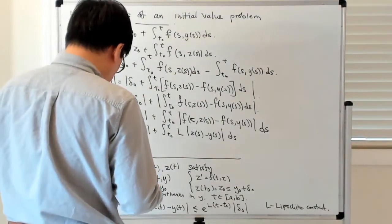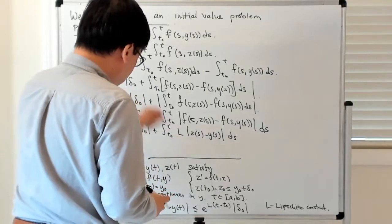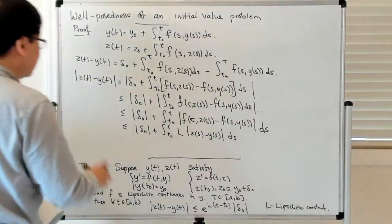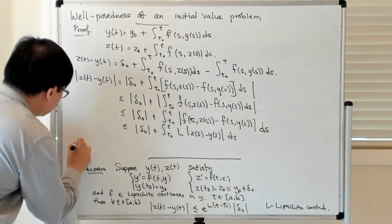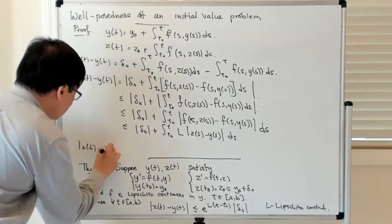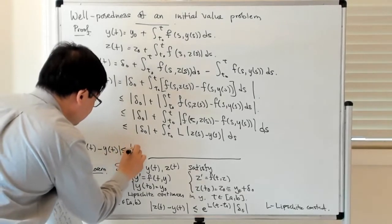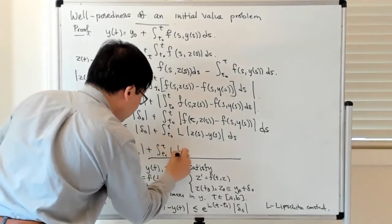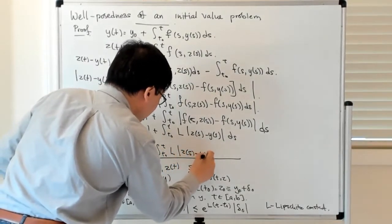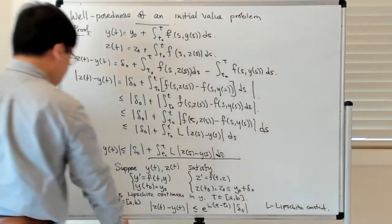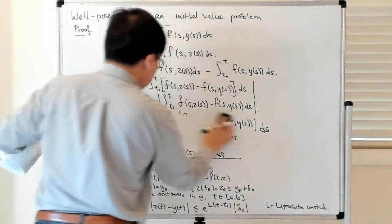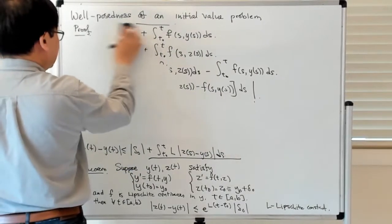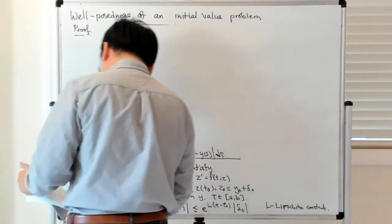This gives us |δ₀| + ∫[t₀ to t] L·|z(s) − y(s)| ds, using the uniform Lipschitz continuity estimate. So we have: |z(t) − y(t)| ≤ |δ₀| + ∫[t₀ to t] L·|z(s) − y(s)| ds. Now we need to make more precise sense of that right-hand side and bound it in some way.